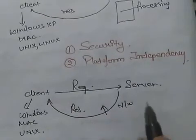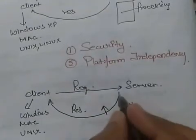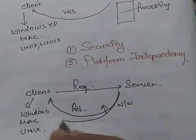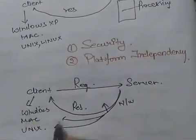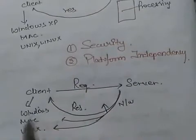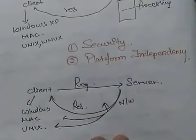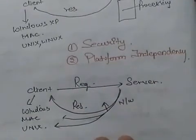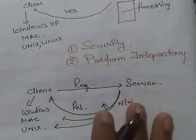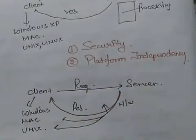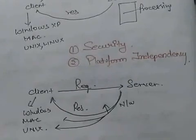In internet programming, when a request comes from the client, the response will be generated and it will be the same for all machines — that is the concept of platform independency. So for a language to be considered an internet programming language, it must fulfill both the security and platform independency concepts. In the next lecture, we will cover these two topics in detail.